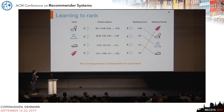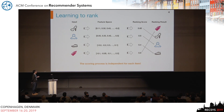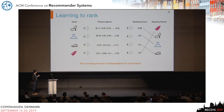Learning to rank mainly represents each item with manually designed feature vectors, along with labeled data. It uses this labeled data to learn a global ranking function, which gives each item a score and ranks accordingly. The scoring process is independent for each item, because each item has an independent feature vector and independent score.